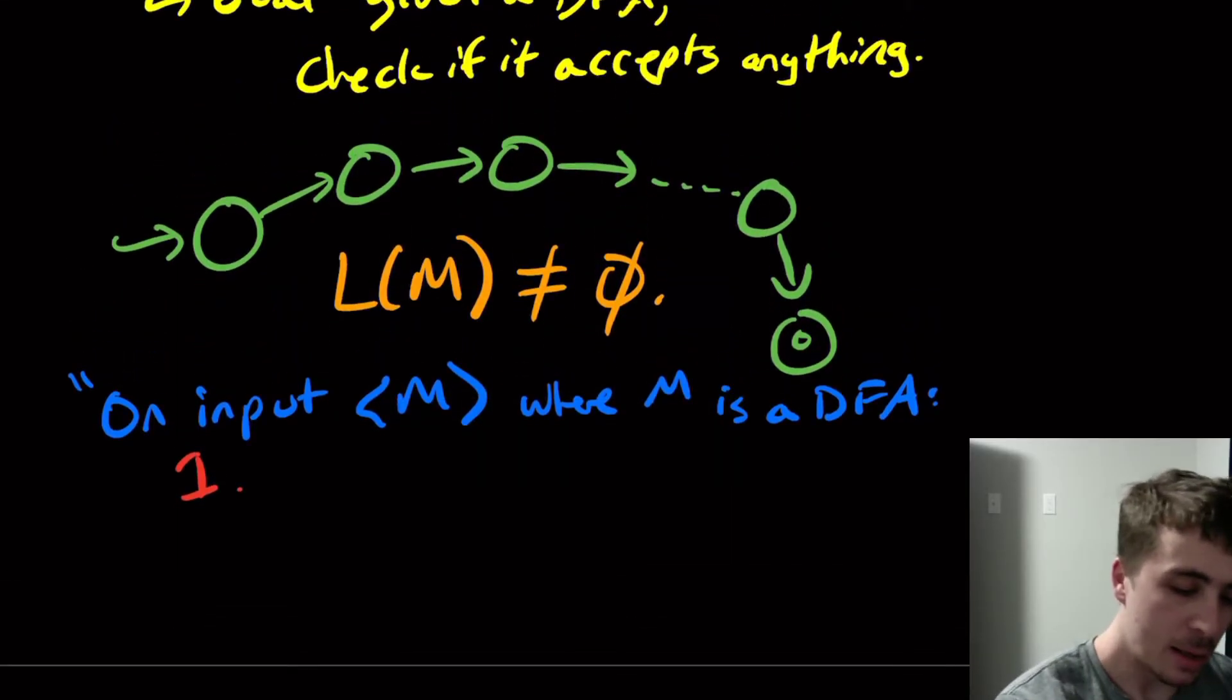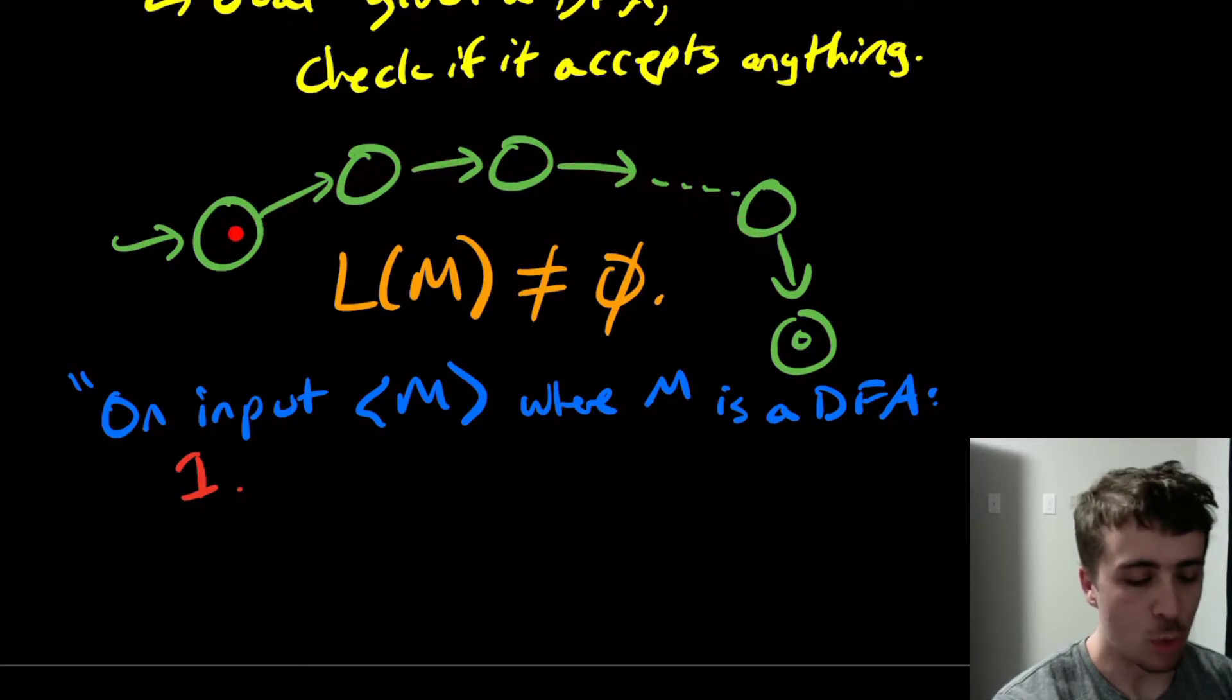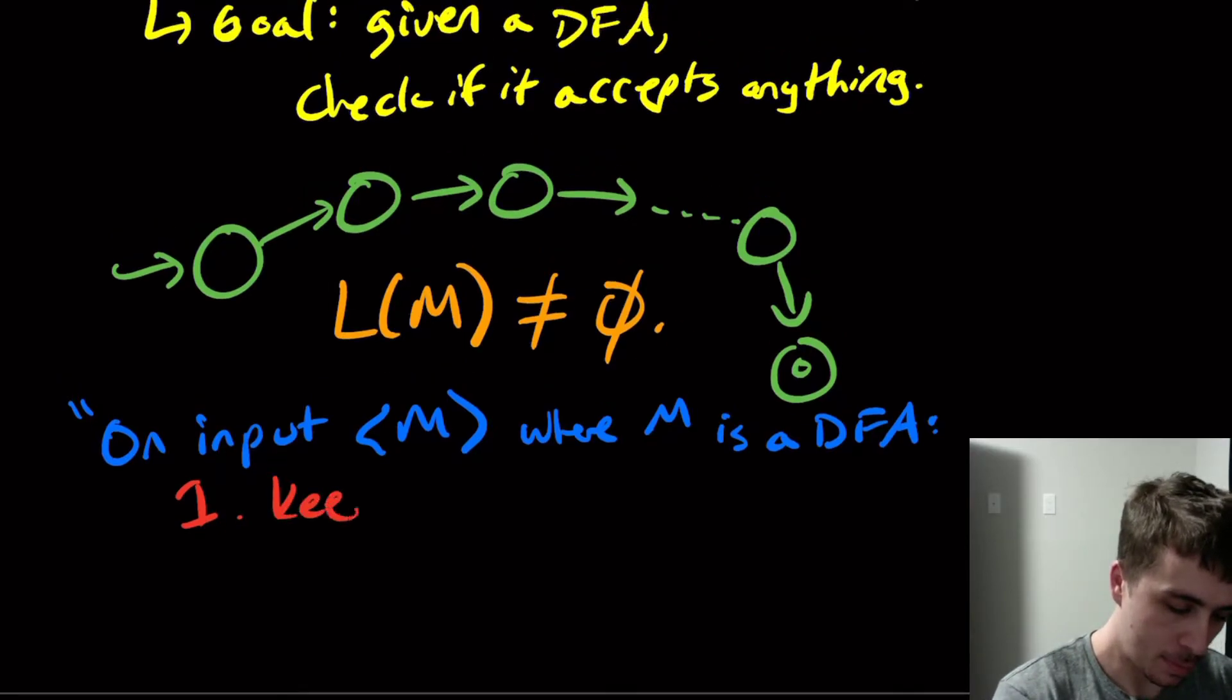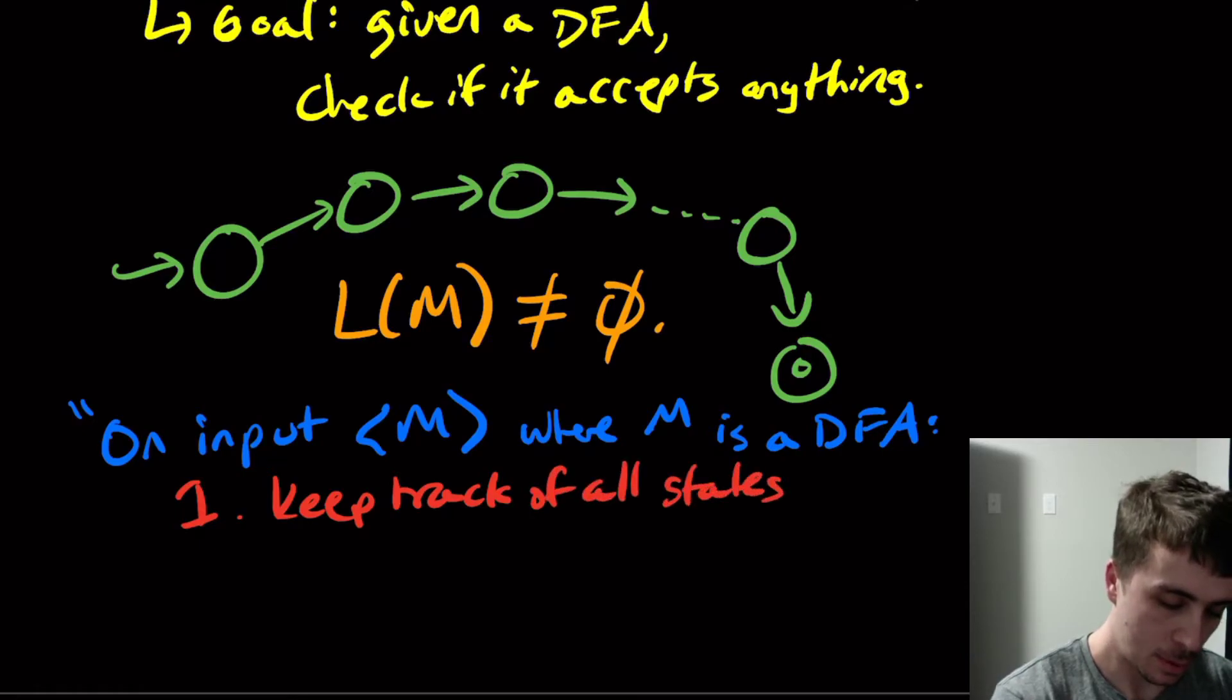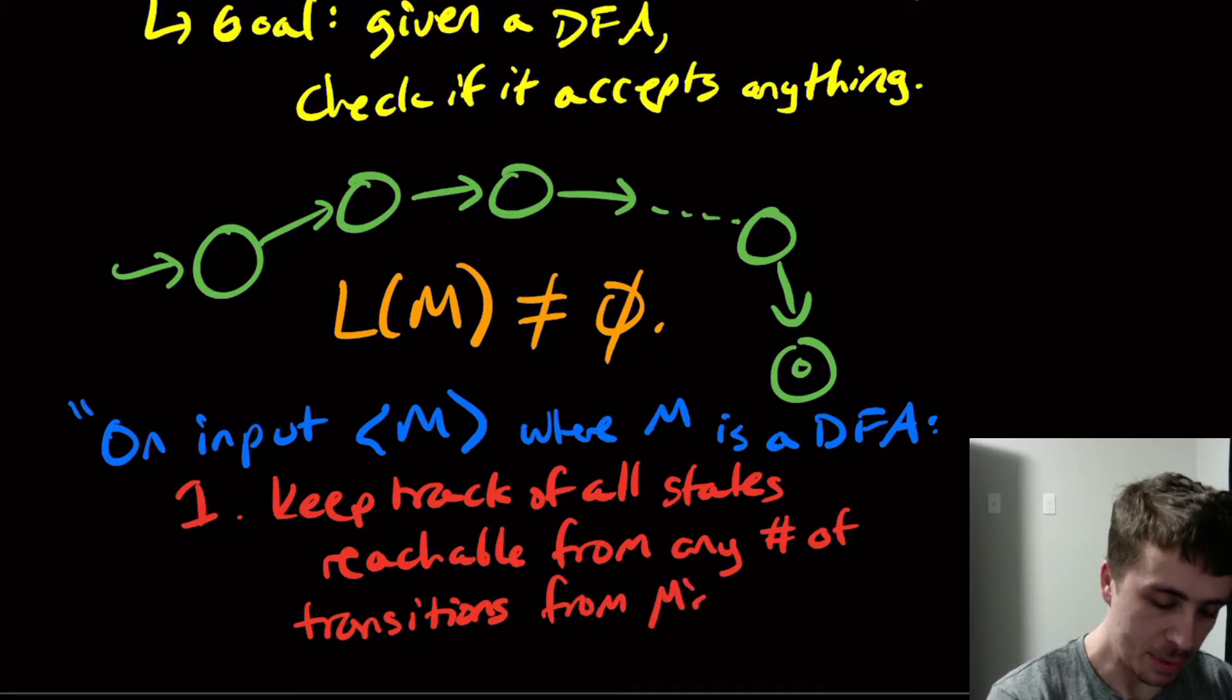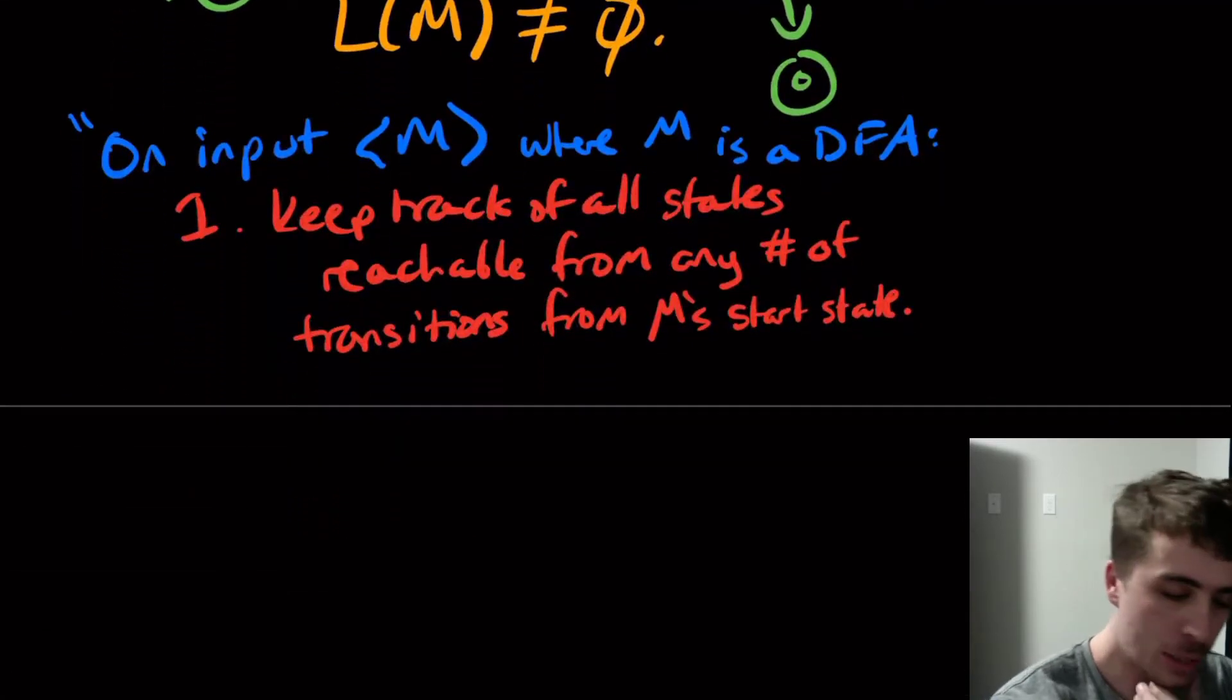So what is the first step going to be? Well, if you think about it, what we're really testing here is whether or not this start state can actually reach any final state whatsoever. So what we can do is just take note of all possible states that are reachable from the start state as is. So let's keep track of all states reachable from any number of transitions from M's start state, whatever that's called.